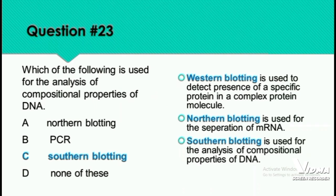Question 23: Which technique is used for the analysis of compositional properties of DNA? The options are PCR (Polymerase Chain Reaction), Northern blotting, Southern blotting, or none of these. Western blotting is used to detect the presence of a specific protein in a complex protein mixture. Northern blotting is used for the separation of messenger RNA. Southern blotting is used for the analysis of compositional properties of DNA — option C is correct.